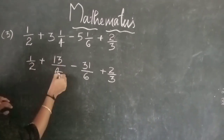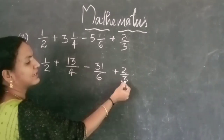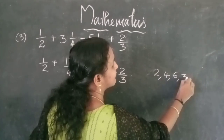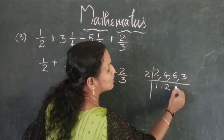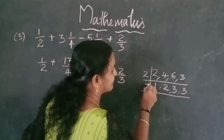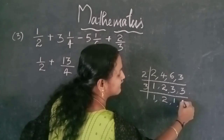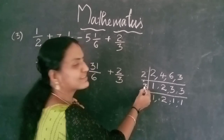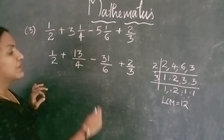The denominators are 2, 4, 6, and 3, which are all different. Find the LCM of 2, 4, 6, and 3. Using prime factors: 2 times 3 times 2 times 1 times 1 equals 12. So the LCM is 12. Multiply each fraction by 12: 12 into 1/2 gives 6; 12 into 13/4 — since 3 fours are 12 — gives 3 times 13 equals 39; 12 into 31/6 — since 2 sixes are 12 — gives 2 times 31 equals 62; 12 into 2/3 — since 4 threes are 12 — gives 4 times 2 equals 8.